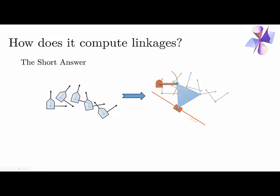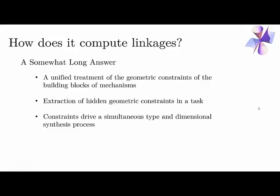In this case, what we are showing is an RR dyad and a PR dyad assembled together to get a four-bar linkage. The longer answer involves some elegant math using planar quaternions, kinematic mapping, as well as linear algebra — specifically singular value decomposition and least squares fitting.